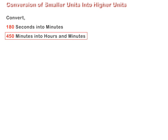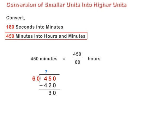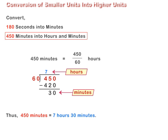To convert 450 minutes into hours and minutes, we divide it by 60. Observe the solution on screen. The quotient 7 represents hours and remainder 30 represents minutes. Thus, 450 minutes are equal to 7 hours 30 minutes.